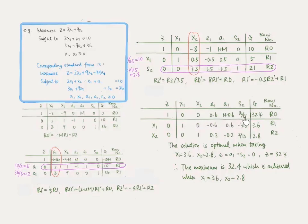There are no more negative coefficients for variables in row 0. Therefore, taking e1 equals 0, a1 equals 0, x2 equals 0 as the non-basic variables, and x1 equals 3.6, x2 equals 2.8, with correspondingly z equals 32.4, this solution is optimal. Therefore, the maximum value of z is 32.4, achieved when x1 equals 3.6 and x2 equals 2.8.